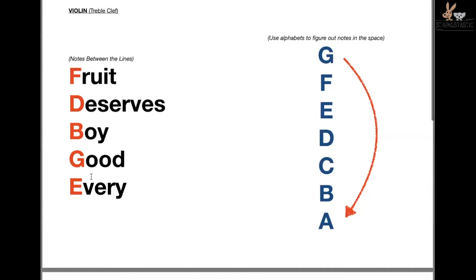The note reading chart shows 'Every Good Boy Deserves Fruit.' Ask them: what is between E and G? Oh, it's F. If kids can't visualize it in their minds, they need to see it in front of them. Then you can ask, what comes after G? It goes back to A. Sometimes kids can't figure out what letter comes before a certain letter, and this visual method helps.